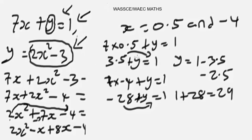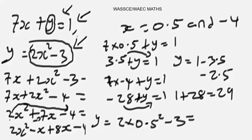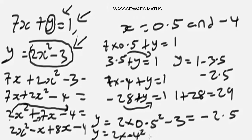Let's verify using the second equation y = 2x² - 3. When x = 0.5: y = 2 × (0.5)² - 3. Punching this into the calculator still gives -2.5. When x = -4: y = 2 × (-4)² - 3 = 2 × 16 - 3 = 32 - 3 = 29. Both values check out, confirming our x values are valid.